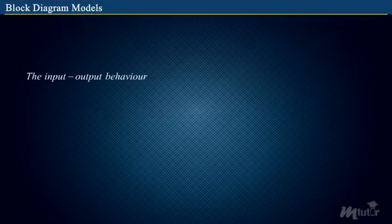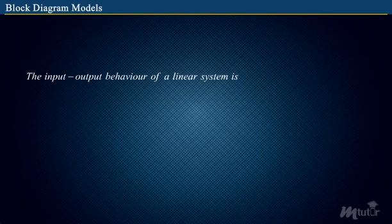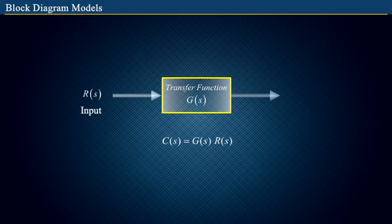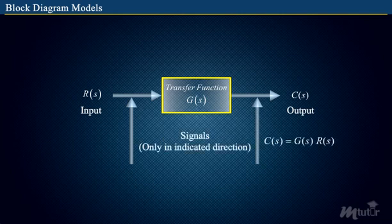Block diagram models. The input-output behavior of a linear system or element of a linear system is given by its transfer function: G of s is equal to C of s divided by R of s. The graphical representation of functions performed by each component of a system and that of flow of signals is said to be a block diagram. In this case, the flow of information or signal is unidirectional from input to output with the output being equal to the input multiplied by the transfer function of the block.